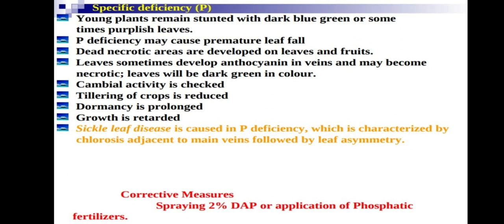Phosphorus deficiency symptoms include young leaves remaining stunted with dark blue-green or purplish coloring. Phosphorus deficiency may cause premature leaf fall. Dead necrotic tissue areas develop on leaves and fruits. Leaves sometimes develop anthocyanin and may become necrotic. Cambial activity is checked, restricting movement of water and food, and tillering of crops is reduced. Dormancy is prolonged.